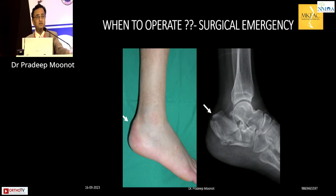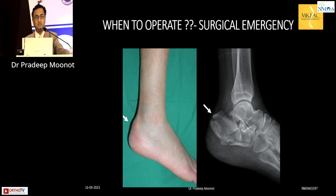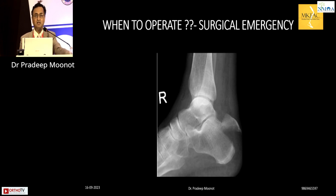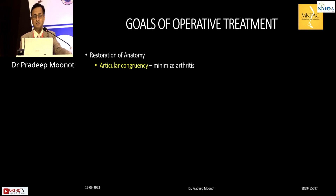There is also the question of when to operate in an emergency. Patients where the posterior tuberosity is pressing directly under the skin and causing near pressure ulceration cannot wait 5, 7, or 15 days for swelling to settle. These should be operated on urgently — reduced and treated accordingly.